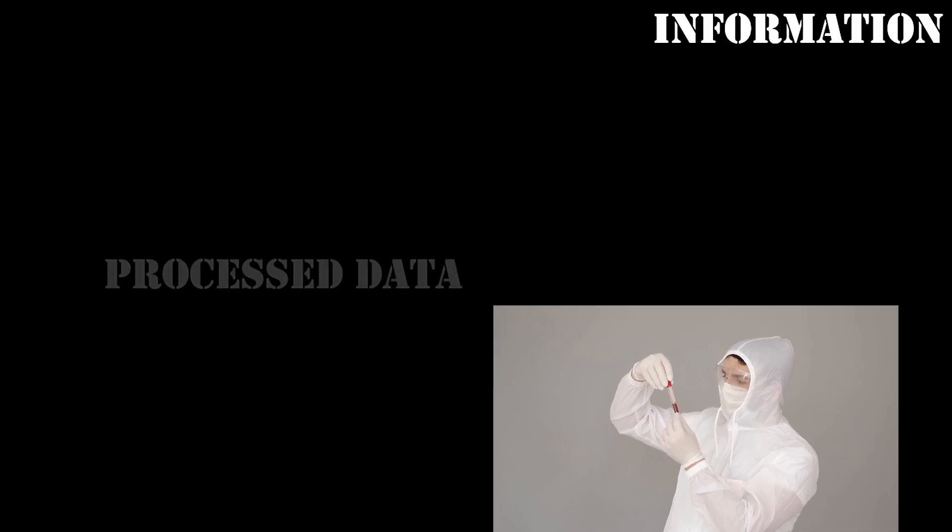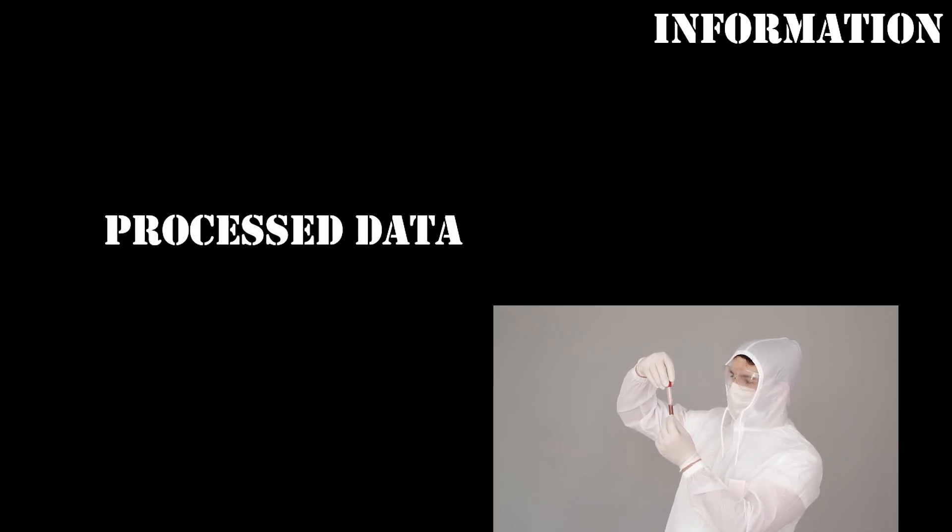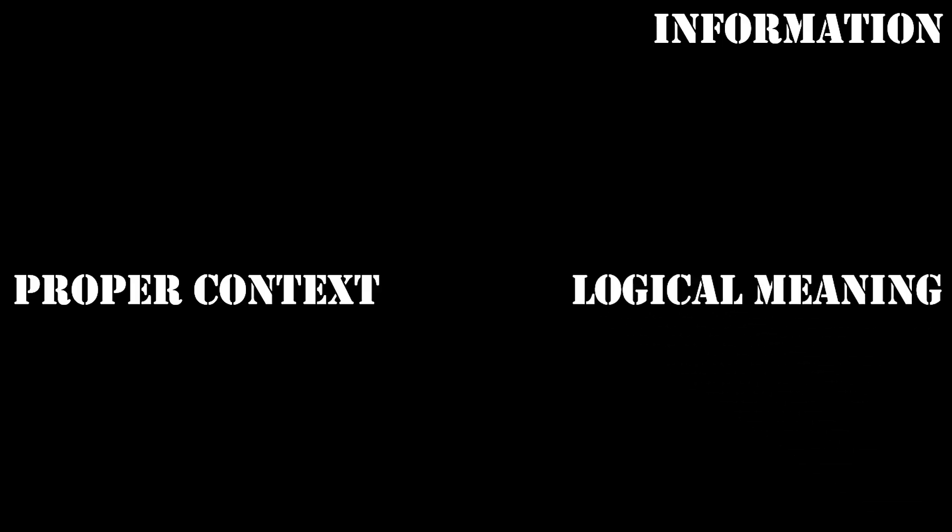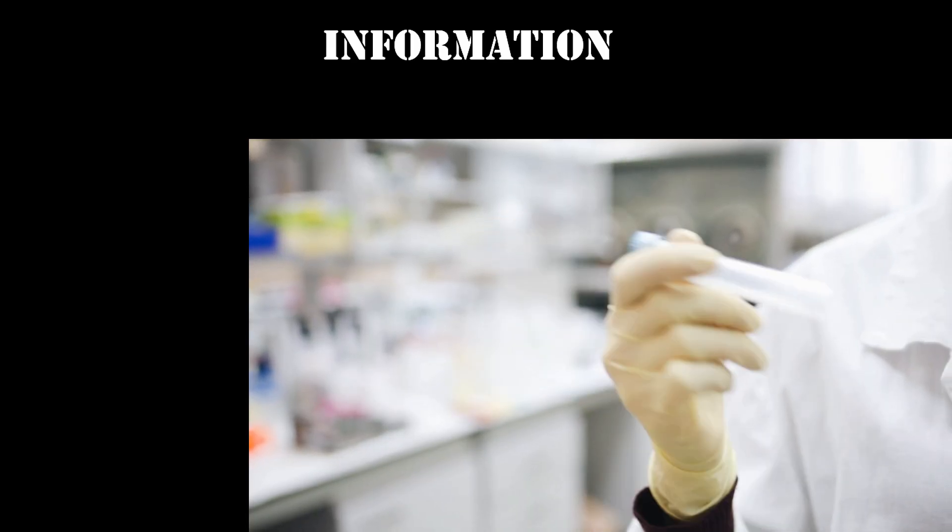Now let's talk about information. Information is what you get after processing data and finding the hidden meaning behind it. When data is presented with proper context and we can derive a logical meaning from it, it will be called information. Information is dependent upon data — without data, there will be no information. Information can be extracted from data.